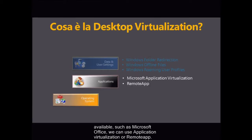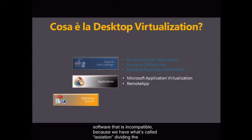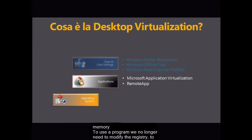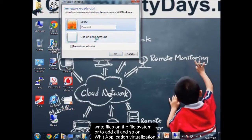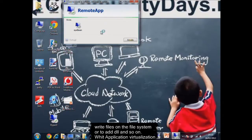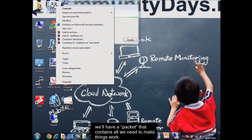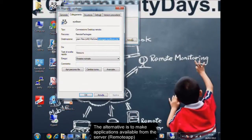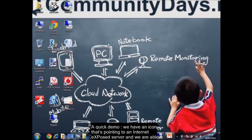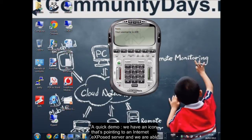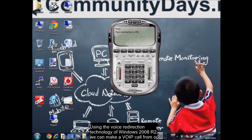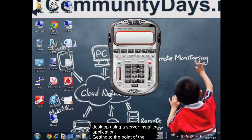To make an application available, such as Microsoft Office, we can use application virtualization or remote app. An application is now a service running on the memory, and we can also simultaneously launch software that is incompatible, because we have isolation dividing the different processes so they are executed in parallel and unrelated zones of the computer's memory. So we can use a program without needing to modify the registry, write files on the file system, or add DLLs. With application virtualization, we'll have a packet that contains all we need. The alternative is to make applications available from the server or remote app. For example, using the voice redirection technology of Windows 2008 R2, we can make a VoIP call from our desktop using a server-installed application with no local installation, but with our settings.